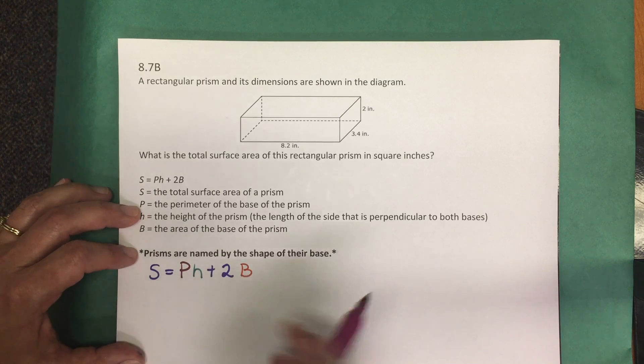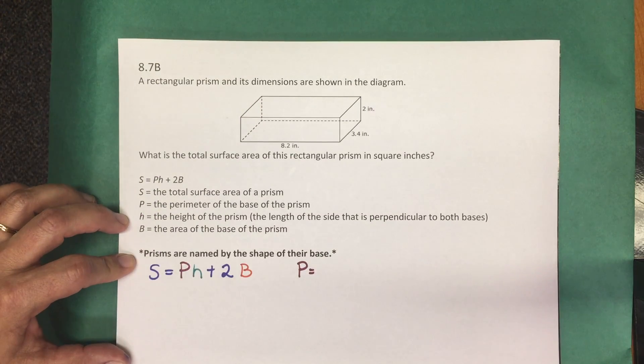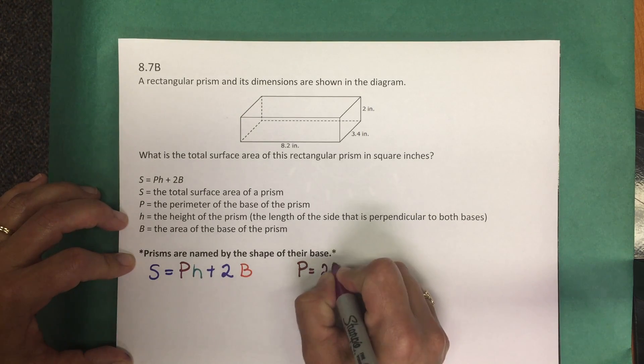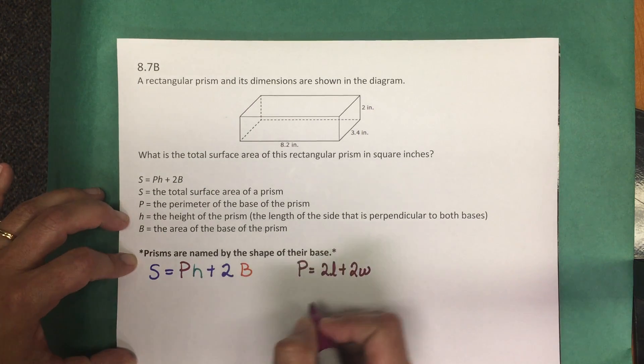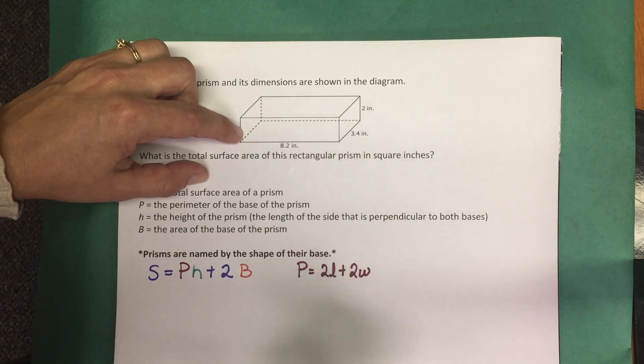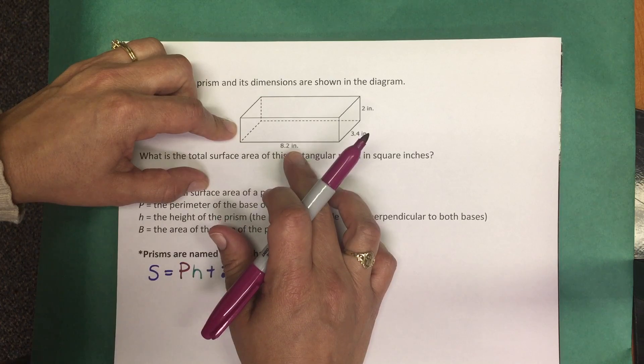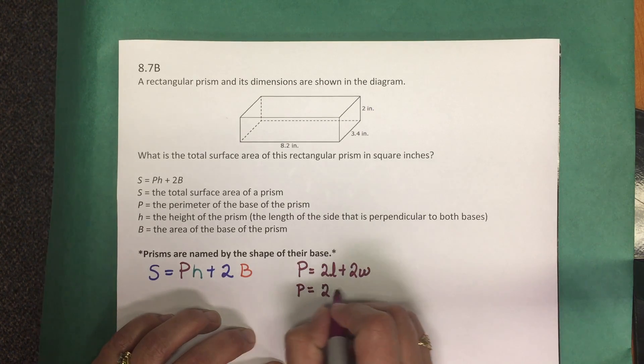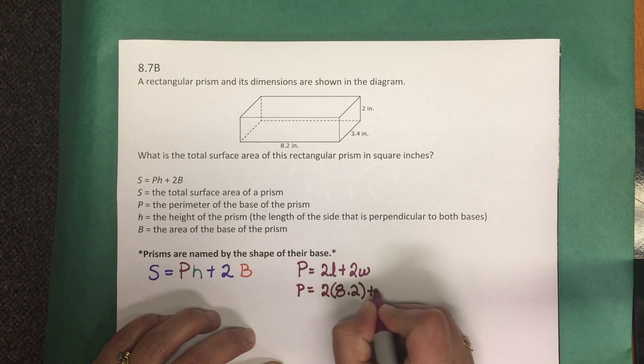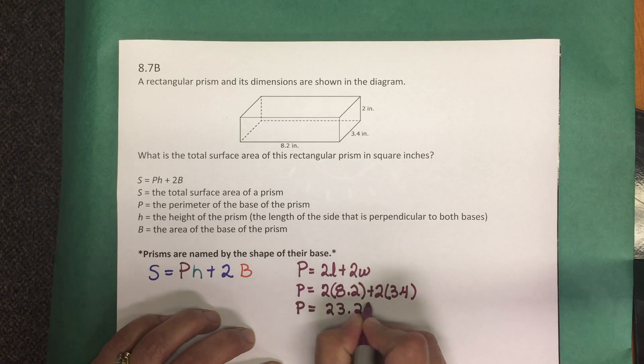Let's start with capital P, which is the perimeter of the base. We know the base is a rectangle. The formula for the perimeter of a rectangle is 2L plus 2W. The base, I'm going to call the face that the prism is actually sitting on, has dimensions of 8.2 inches and 3.4 inches. So we're going to substitute those values into the perimeter formula: 2 times 8.2 plus 2 times 3.4. Multiply and add, simplify, and we get that the perimeter is 23.2 inches.